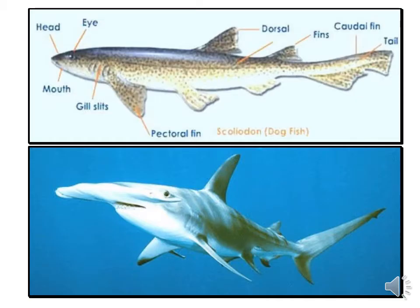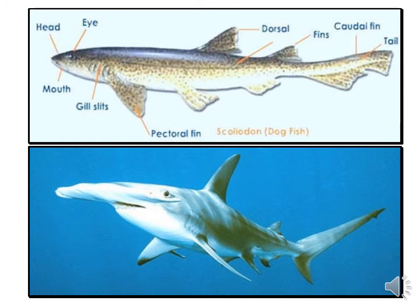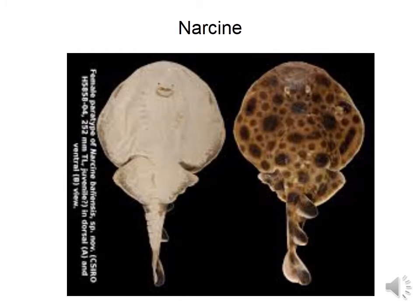An example is Scoliodon. You can see the tail is peculiar — the dorsal lobe into which the vertebral column extends is larger, while the ventral lobe is small and devoid of vertebrae. The mouth is on the ventral side in the case of Chondrichthyes. Gill slits are visible in this region. Narcine comes under class Chondrichthyes, subclass Elasmobranchii.